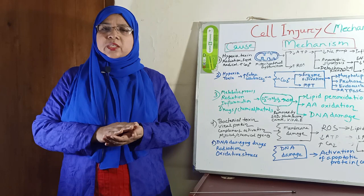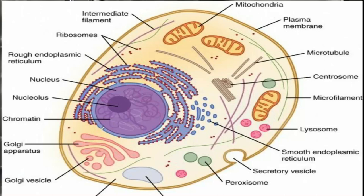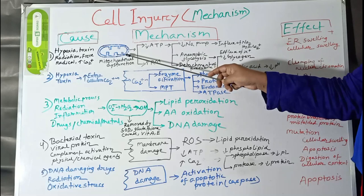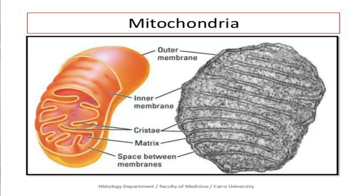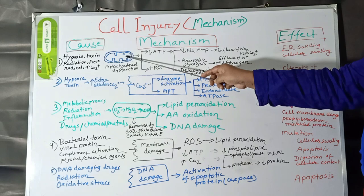The most important question is: how do these factors cause cell injury? That is the biochemical mechanism of cell injury. This flowchart explains the cause, mechanism, and effect of cell injury. The most important and fundamental mechanism of cell injury is ATP depletion. ATP is synthesized within the inner mitochondrial membrane by oxidative phosphorylation with utilization of oxygen. When mitochondria is damaged, ATP synthesis is decreased.